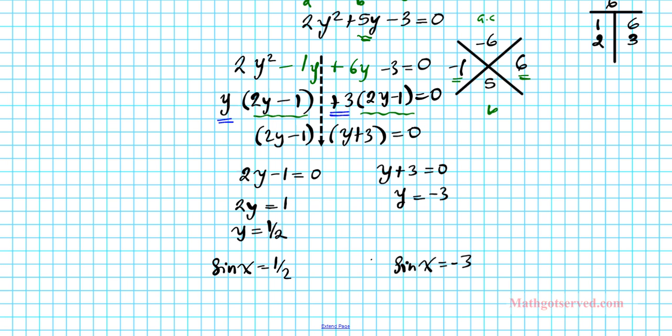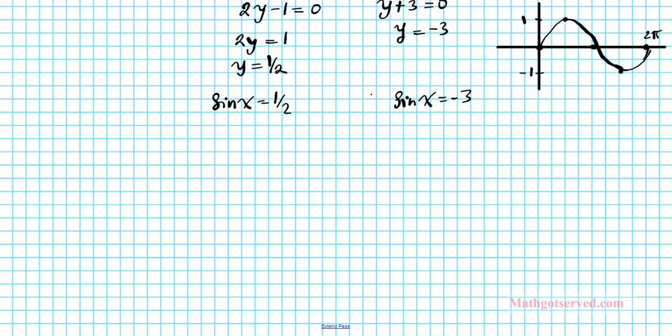Which of these makes sense? If you think about your sine function, it has a constraint on its range. Let's make a sketch. Sine starts from the center, goes to the maximum, back to the center, to the minimum, back to the center. This is our sine function. The question is, if the maximum is 1 and the minimum is negative 1, can sine ever attain a value of negative 3? The answer is no. So this solution is extraneous. It's not a valid solution, so we drop it.